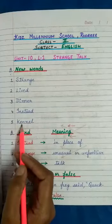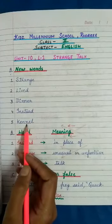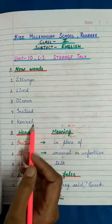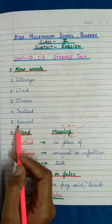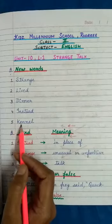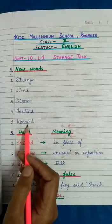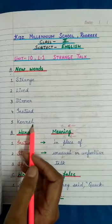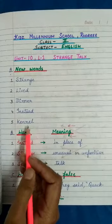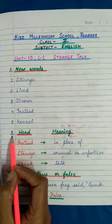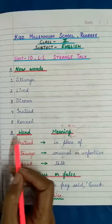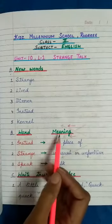Fifth: K-E-N-N-E-L. Kennel. Now we come to Part B, Word Meaning.